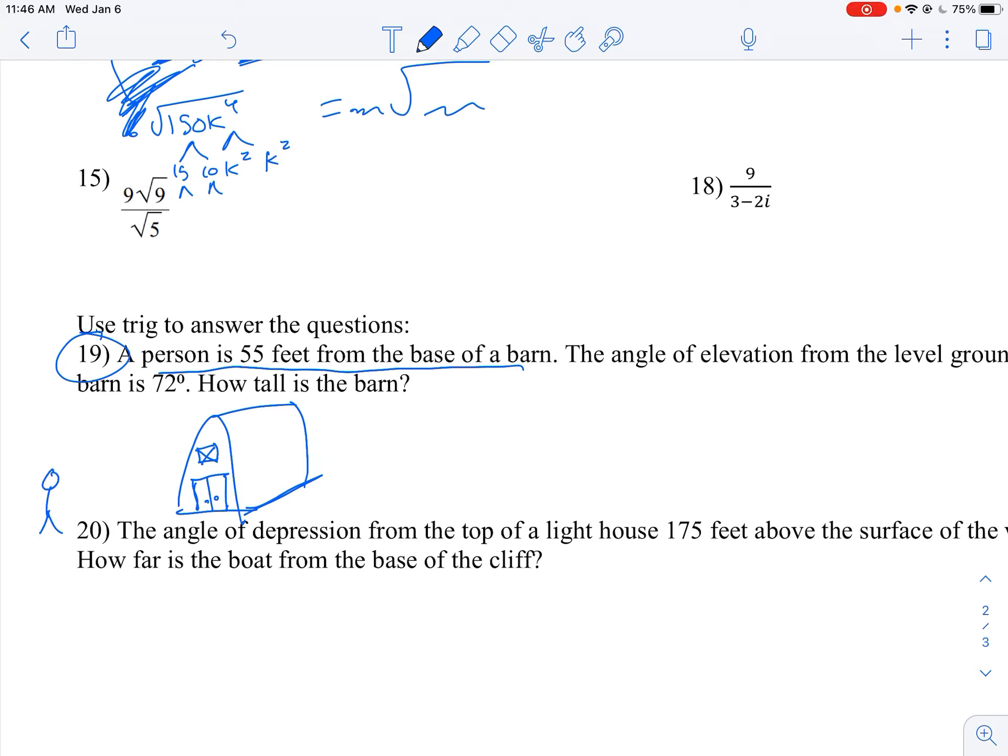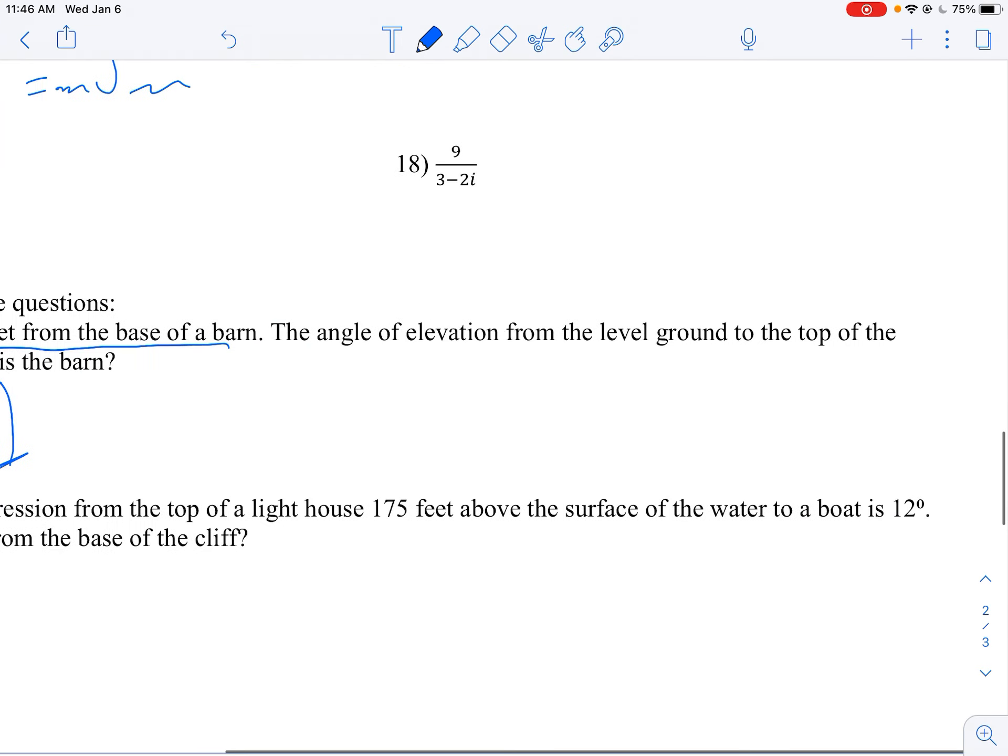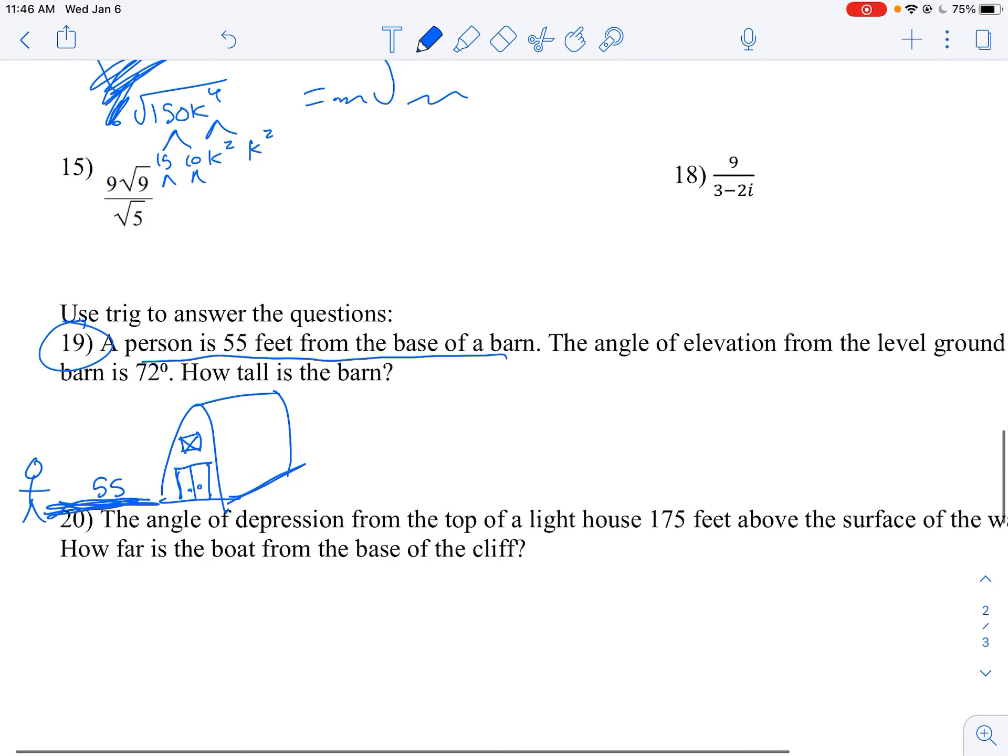Anyway, person 55 feet away. 55. And the angle of elevation from level ground to the top of the barn is 72. This is definitely not to scale. So this is going to be 72 degrees. Remember, angle of elevation is from horizontal going up. Angle of depression, which is like down here, is horizontal going down, line of sight there. So remember those two things that help you a lot with your pictures.